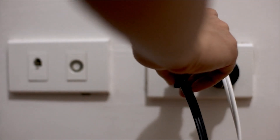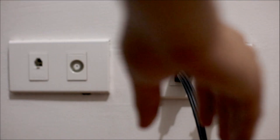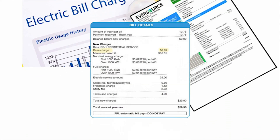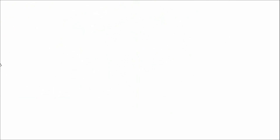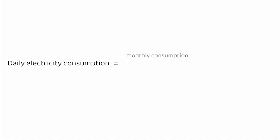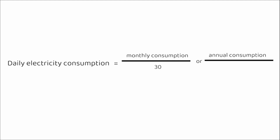It's essential to determine your average energy consumption. This information is typically found on your electricity bills and is measured in kilowatt hours. Understanding how much energy your household uses on a monthly or yearly basis is the starting point for sizing your solar panel system. Your bill should show your usage for 30 days, and you can divide the total usage by the number of days to get your daily electricity consumption.